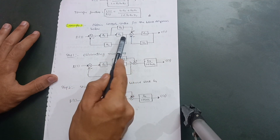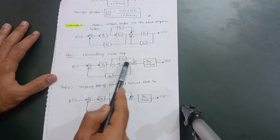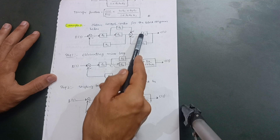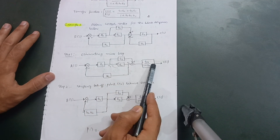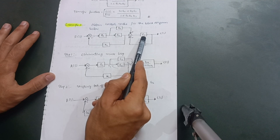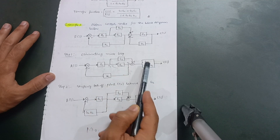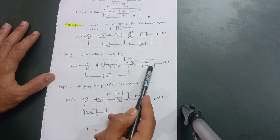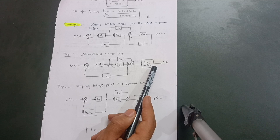We have the summing point, G1, H2, G3, G2, takeoff point T2, and takeoff point T1. When I reduce this diagram, I apply the formula G(s) / (1 + G(s)·H(s)). Here G(s) is G4, so it becomes G4 / (1 + G4), and the feedback is H1, giving G4 / (1 + G4·H1).